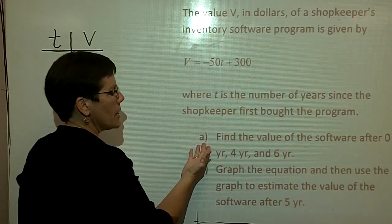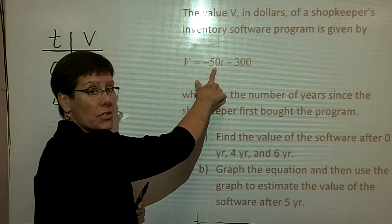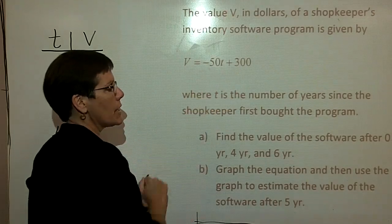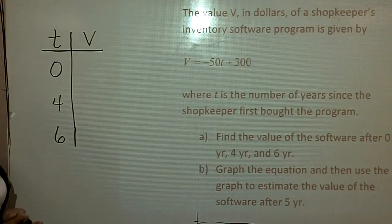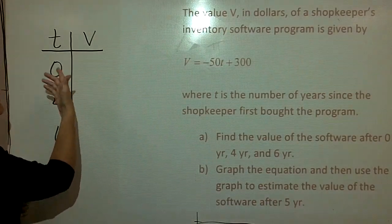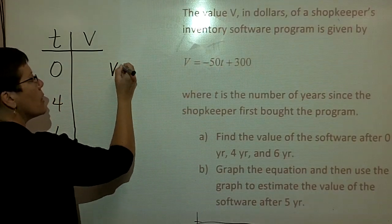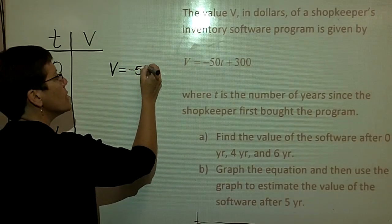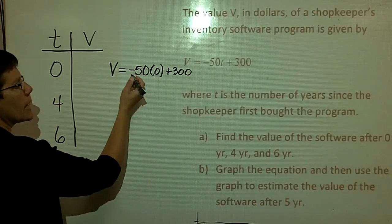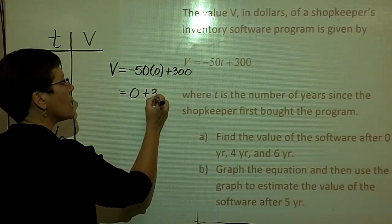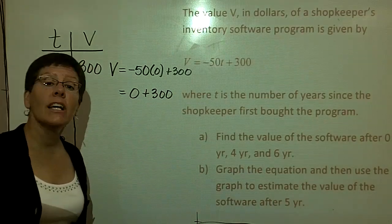What I'm going to do is it says in part A to find the value of the software, given that I'm depreciating it at a rate of $50 a year, having bought it at $300 after zero years, four years, and six years. So I've created a table here of values. So when X or T in this case is zero, V would be found by taking negative 50 times zero and adding $300 to it. Negative 50 times zero is zero, and when I add $300 to it, it means that the value of the software was $300 initially.